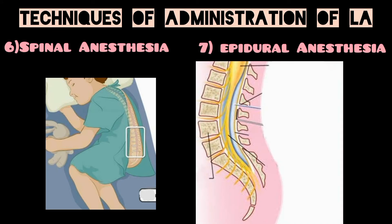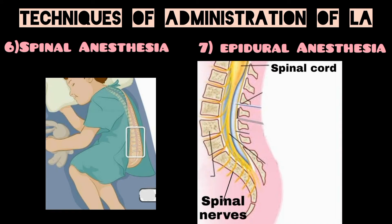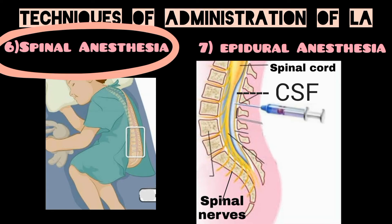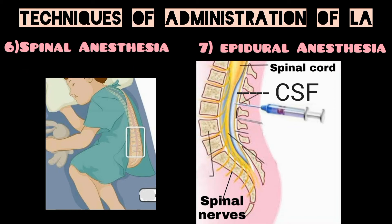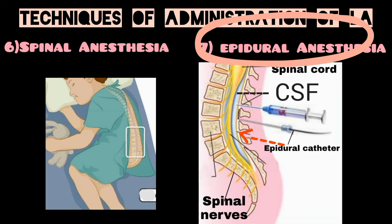Next we have spinal anesthesia and epidural anesthesia. These are the lumbar vertebrae, and in the space inside we have a spinal cord with its spinal nerves and CSF in the intrathecal space, where spinal anesthesia is given by a spinal needle. The intrathecal space is covered by a sheet of dura mater, and the space between the dura mater and the vertebral wall is the epidural space, where epidural anesthesia is given through a catheter.